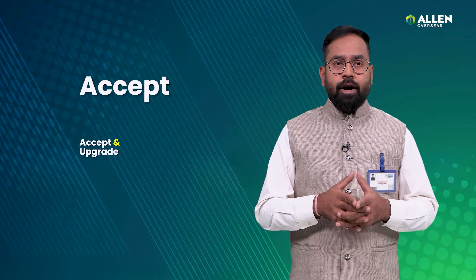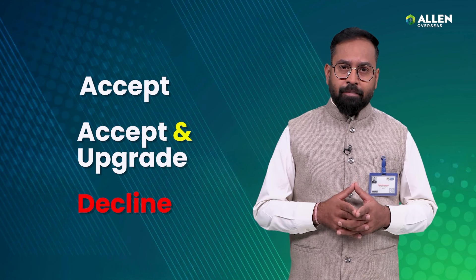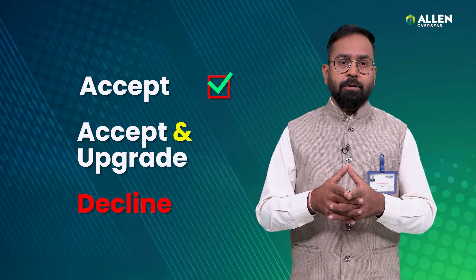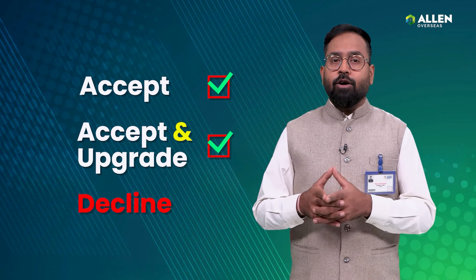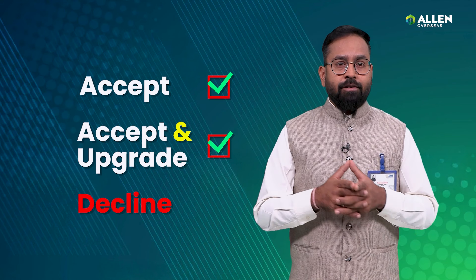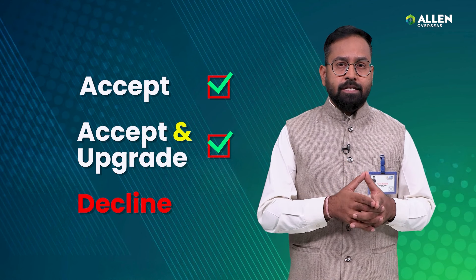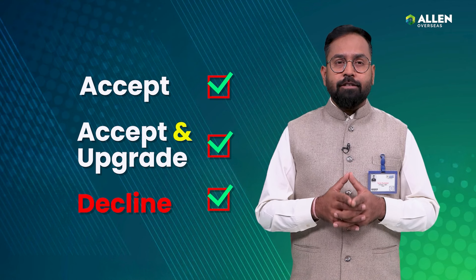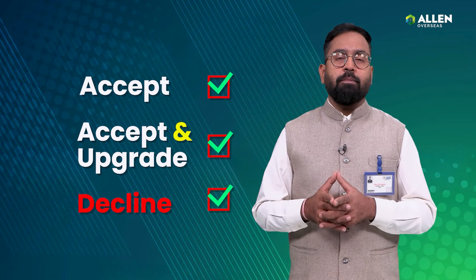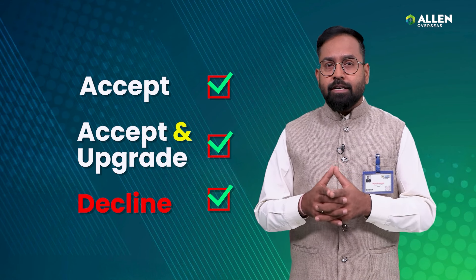It is advisable to go for other rounds if you feel you may get a better seat. Situation two: if a candidate is allotted any institute or course in round one but not the one they desire, they have three options — accept, accept and upgrade, or decline. If you accept the allotted institute, a provisional letter will be generated. If you accept the current seat but are also interested in round two for upgradation of your institute or course as per your choice list, a provisional letter will be generated for this too. If you decline the allotted institute, a seat cancellation and withdrawal letter will be generated and you will not be eligible for further rounds.